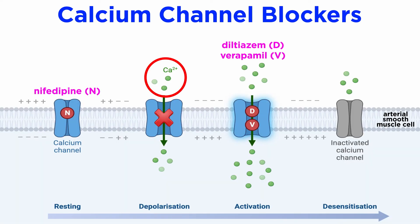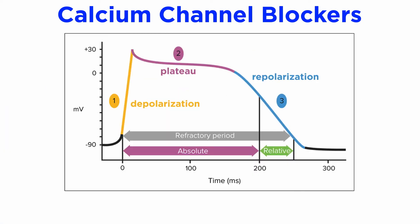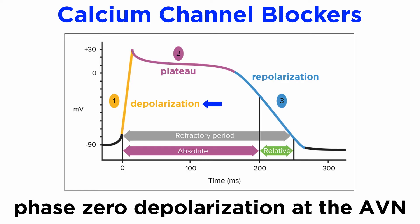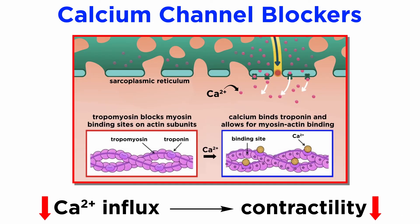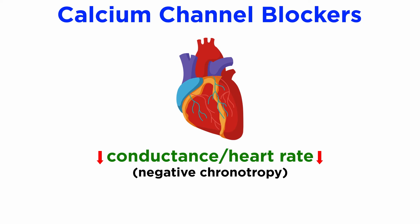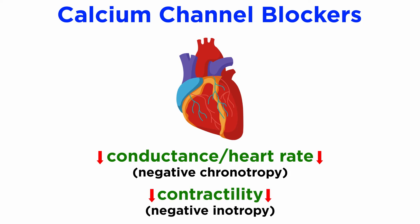Type 4 drugs are calcium channel blockers. We have discussed calcium channel blockers in the context of antihypertensive drugs, which reduce blood pressure. Their effect on the heart is primarily mediated at the nodes, mainly the AVN, at phase 0 depolarization mediated by calcium influx. They also slow down phase 2 of the myocyte action potential, where there is outward potassium flow and inward calcium flow, which is inhibited by these drugs. Decreased calcium influx also reduces contractility through reduced binding to troponin. Calcium channel blockers reduce conductance and therefore heart rate, known as negative chronotropy, as well as contractility, or negative inotropy, of the cardiac myocytes.